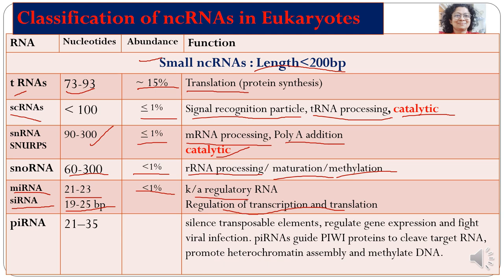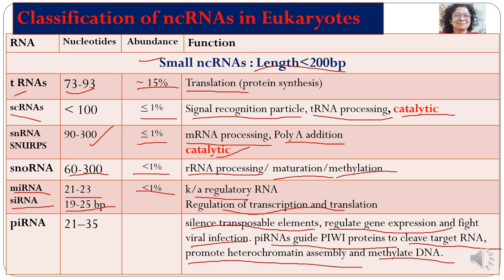One more type of known non-coding RNA is the piRNA — the Piwi-interacting RNA. This was first discovered in Drosophila and has 21 to 35 nucleotides. It is involved in silencing of transposable elements, regulates gene expression, fights viral infection, acts as a guide to Piwi proteins to cleave target RNA, promotes heterochromatin assembly, and is also involved in DNA methylation. These are the various types of non-coding RNAs known in eukaryotes and the discovery is still ongoing.